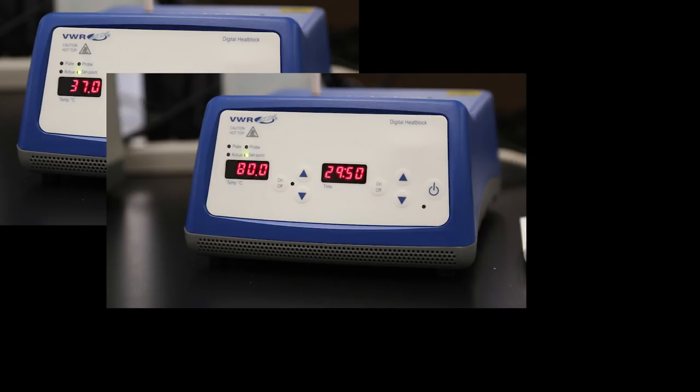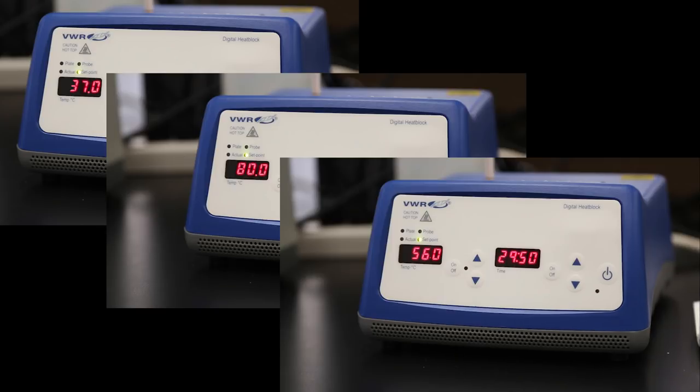If you are using three single blocks, set the first to 37 degrees Celsius, the second to 80 degrees Celsius, and the last to 56 degrees Celsius. Remember, the green light must be on for the block to heat.